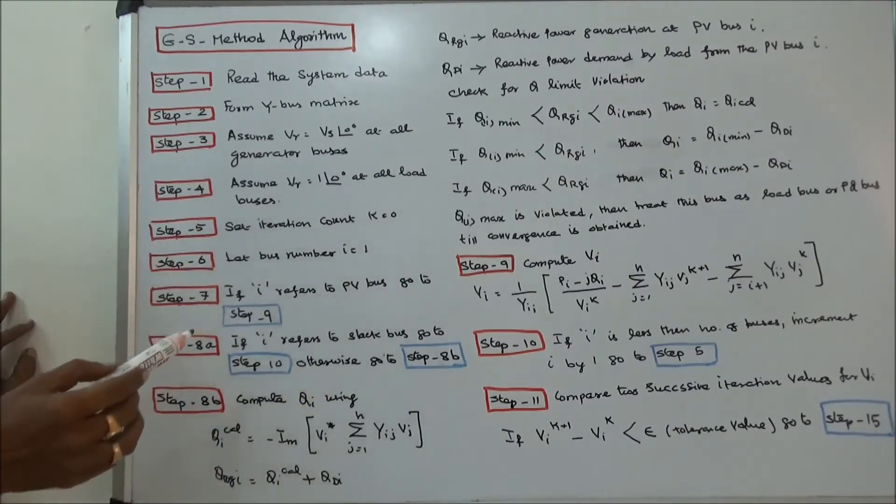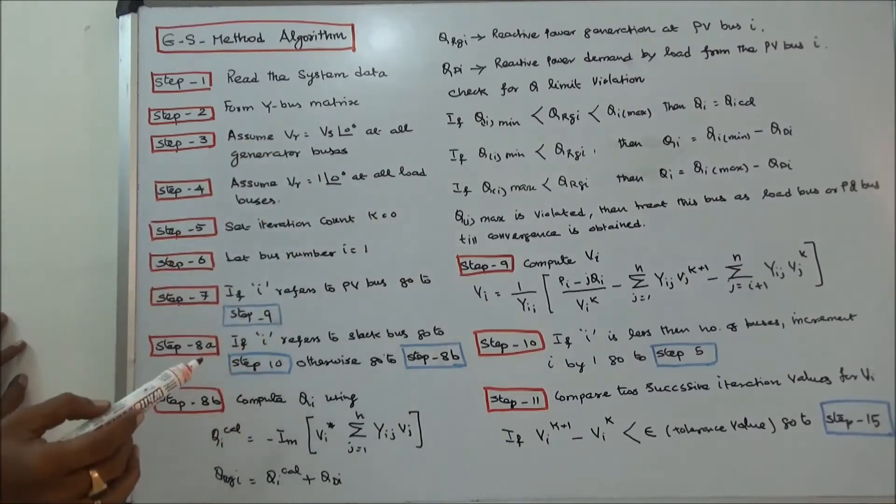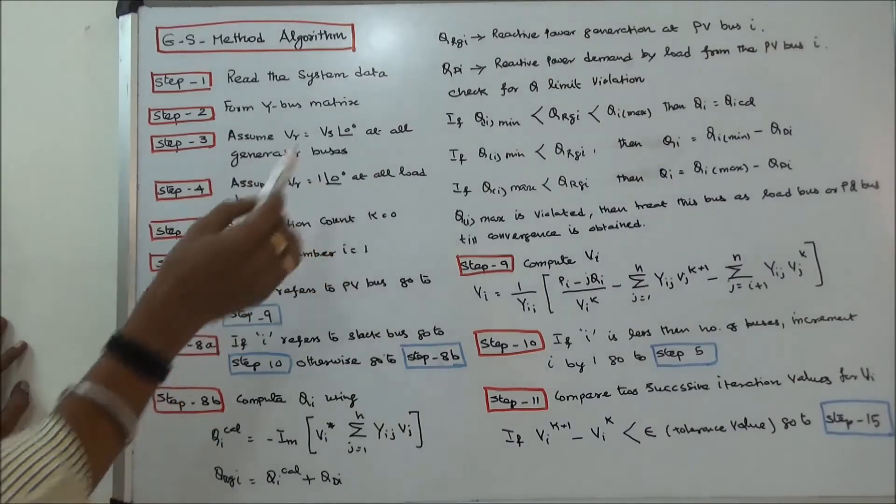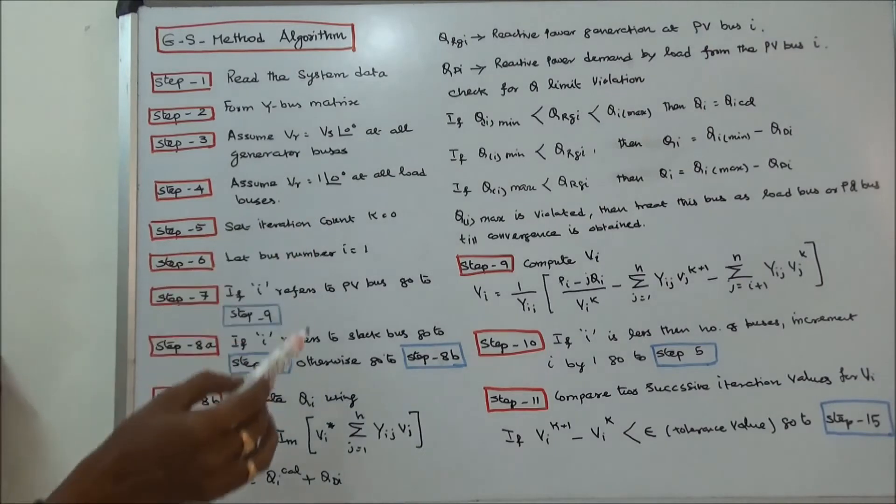Step 3: Assume the reference V's angle 0 at all generator buses. Step 4: Assume PR is equal to 1 angle 0 at all load buses. Step 5: Set iteration count K is equal to 0.